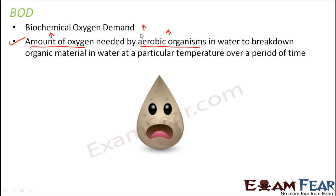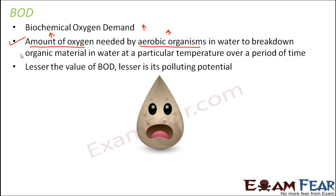When the value of BOD is more, the number of aerobic organisms is also more, and that happens when the amount of organic material is more. When organic material is more, the sewage is less treated and has more polluting potential. Our aim in sewage treatment is to reduce the polluting potential so the sewage becomes less harmful. There is a direct relationship: lesser the value of BOD, lesser is its polluting potential. We must ensure that BOD reduces to a very large extent, and that is where we stop the secondary treatment and say the sewage is properly treated.